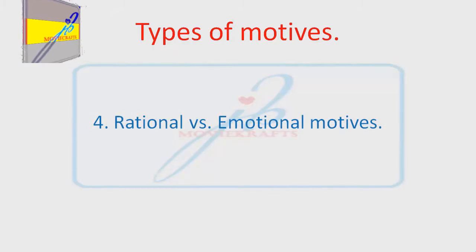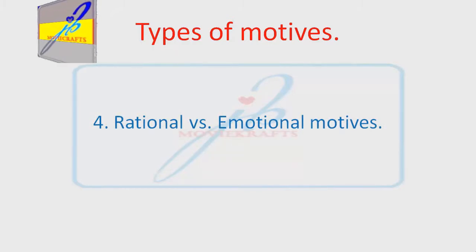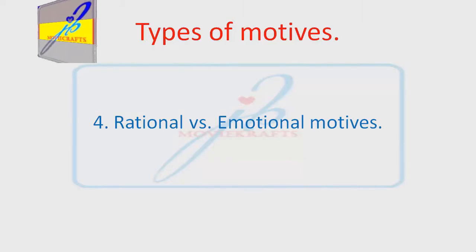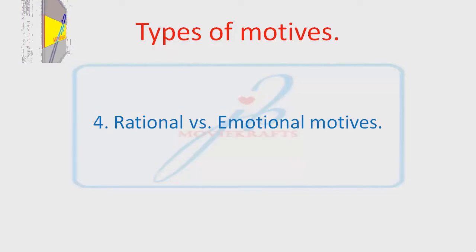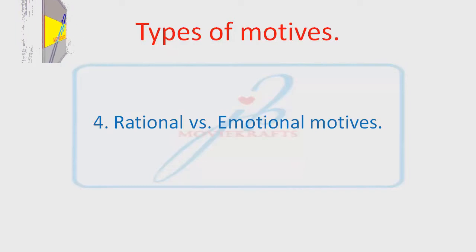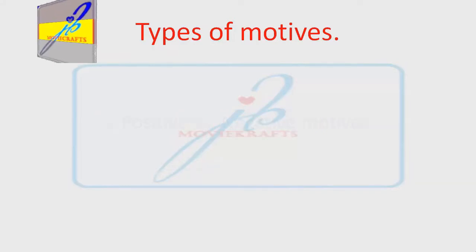Rational vs. Emotional Motives: rational motives guide people in the direction which they consider best in the present circumstances, while emotional motives are those motives which are of emotional value without considering the positives, negatives, pros and cons of the problem.